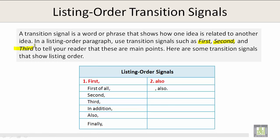Here are some transition signals that show listing order. Number one: first, first of all, second, third, in addition, also, and finally.